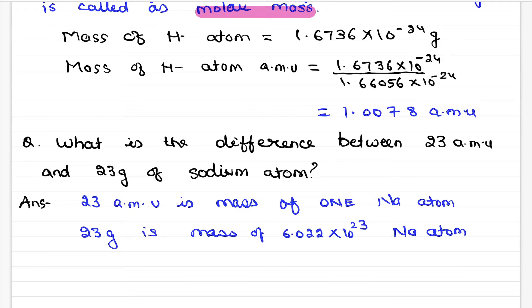Now this number is very big. It can also be written as it is the mass of, you can say, 23 gram is mass of 1 mole of sodium atom. In this way I guess AMU and molar mass.